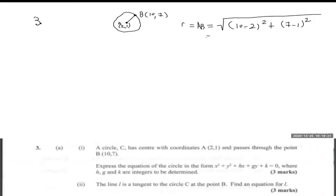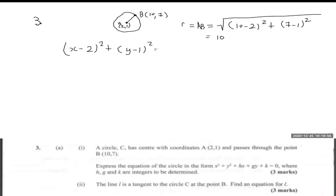...plus (7 minus 1) squared. So 10 minus 2 is 8, and 8 squared is 64, plus 6 squared is 36. The square root of 64 plus 36 is the square root of 100, so the radius is 10. Therefore the equation of the circle is x minus 2 squared plus y minus 1 squared equals r squared, which is 100.